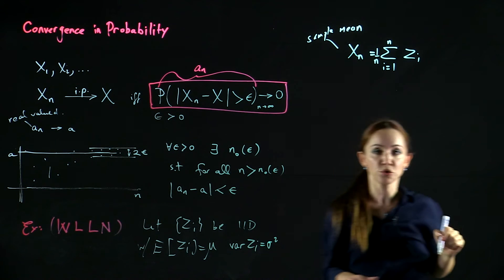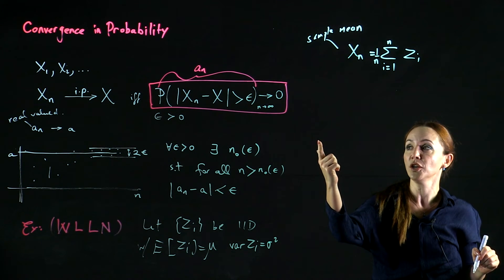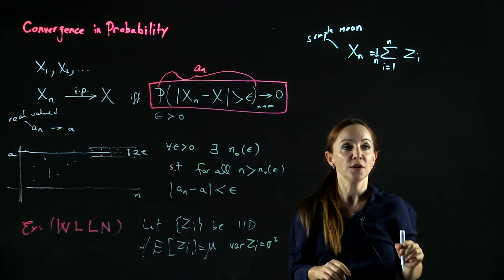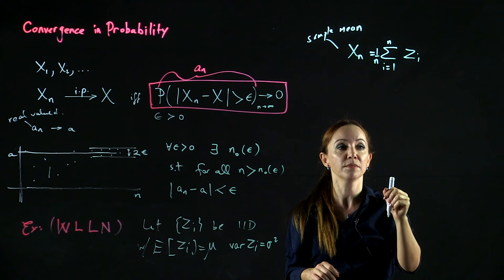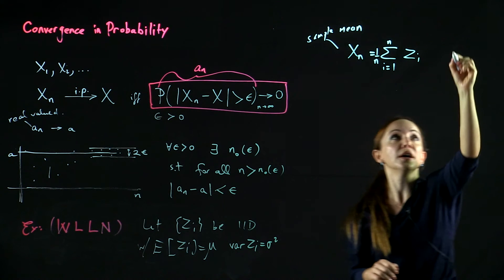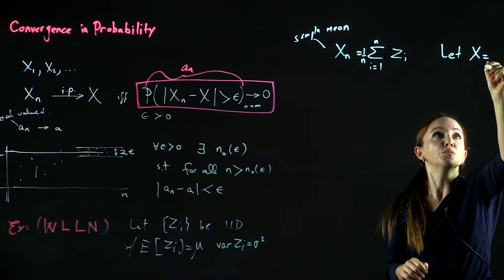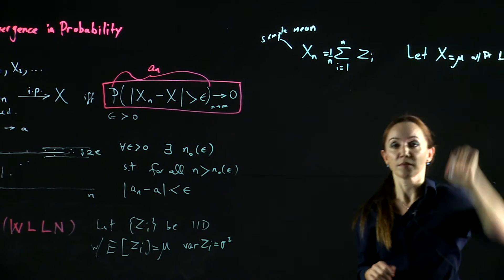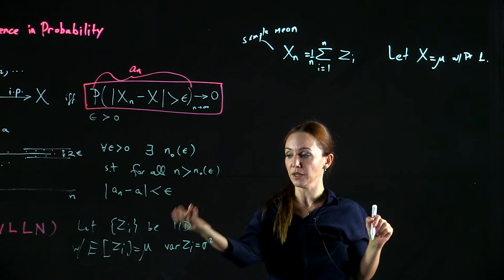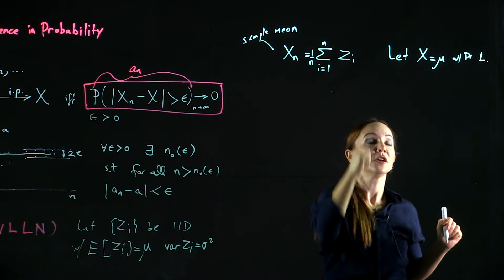We will now show using Chebyshev inequality that the sample mean converges in probability to the actual expectation. So here is the claim. To be more precise, let's define a random variable X which is equal to mu with probability 1.